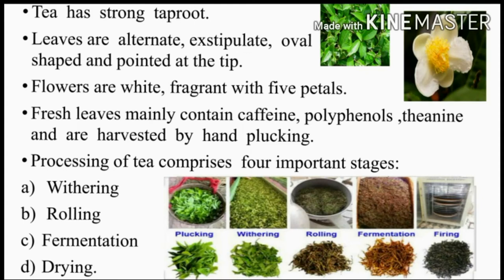Leaves contain caffeine and polyphenols. Processing of tea comprises four important stages: withering, rolling, fermentation, and drying. Fermentation is done with controlled temperature and oxygen supply. Differing in these steps makes different types of teas — green tea, black tea, and yellow tea.